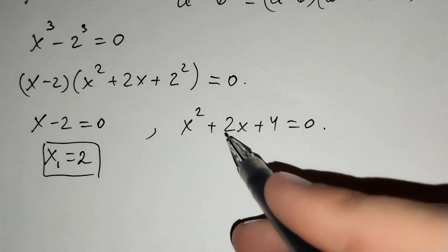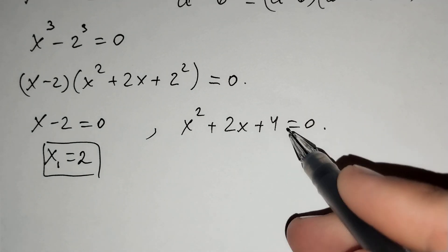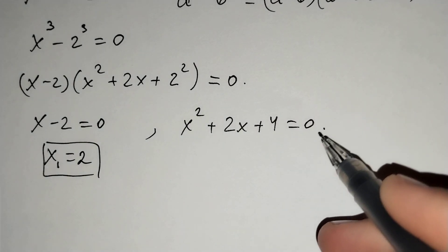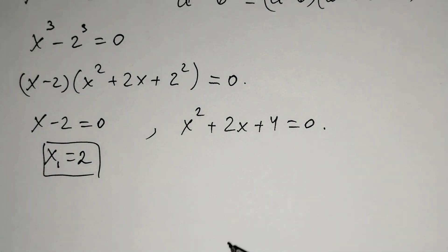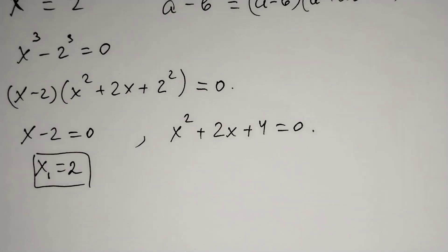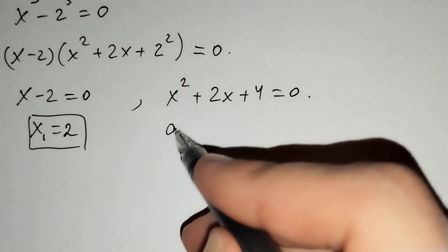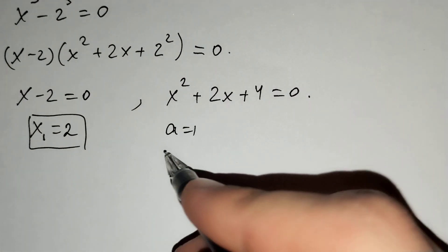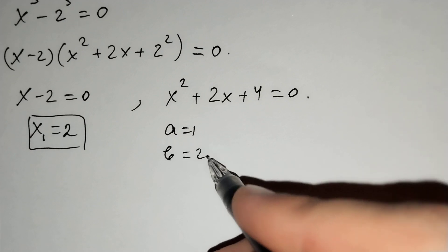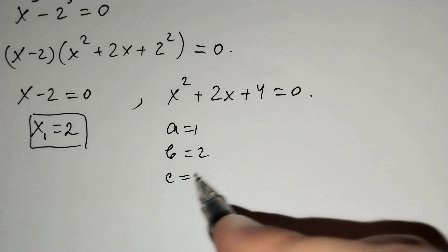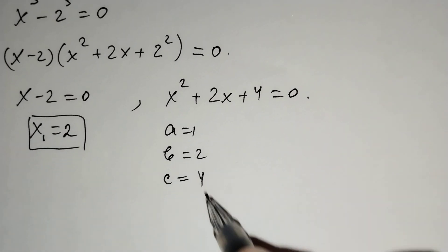Then, x squared plus 2x plus 4 equals to 0. This is a quadratic equation, where a equals to 1, b equals to 2, and c equals to 4.